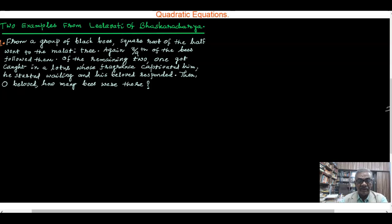He started wailing and his beloved responded then, oh beloved how many bees were there? Now this is the question which he asked in Leelavati and also solved this example using quadratic equation. The answer is total number of bees is 72 which you can verify this answer.